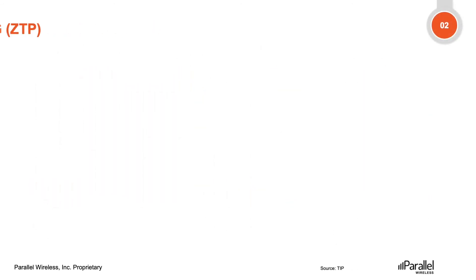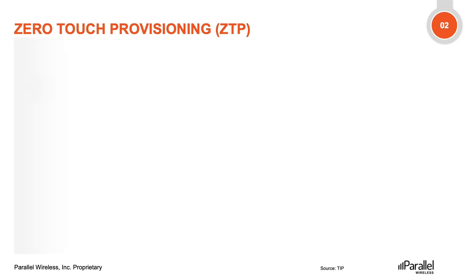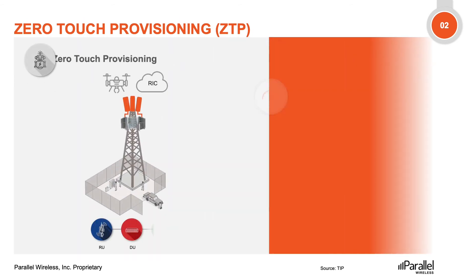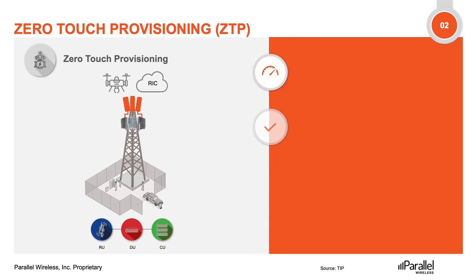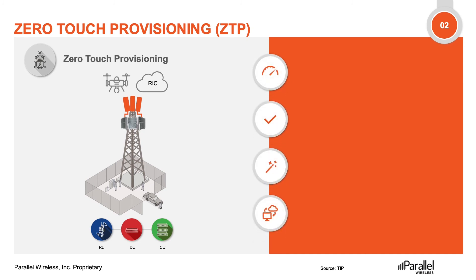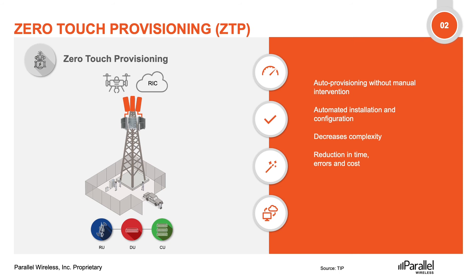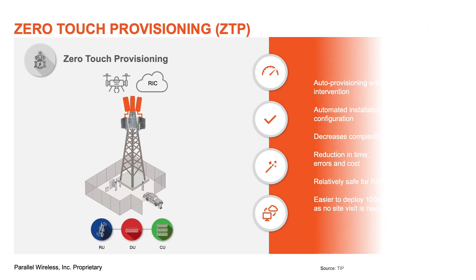The next stage is Zero Touch Provisioning (ZTP). Once the infrastructure is set up, ZTP is the automated way of provisioning a service — bringing a radio site up — with no manual intervention needed. Key aspects include automated software installation and configuration, decreased complexity, reduced time, error, and cost. It is relatively safe for RAN installation and makes it easier to deploy a large number of sites since no site visits are required.